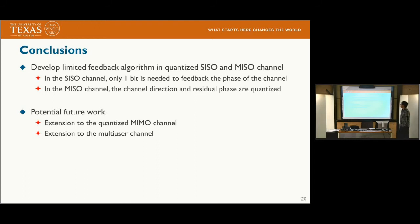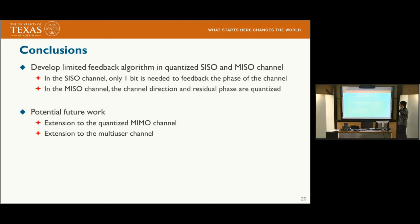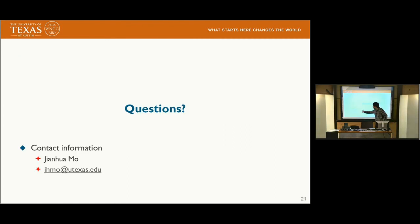In conclusion, we develop a limited feedback algorithm for quantized SISO and MISO channels. In the SISO channel, only one bit of feedback is needed. In the MISO channel, we use two codebooks — one for channel direction and one for phase — and we find that more bits should be used for direction and only one bit for the phase. Future work includes extending to quantized MIMO channels with multiple receive antennas and to multi-user broadcast channels where each user has a single antenna and uses a one-bit ADC. Thank you.